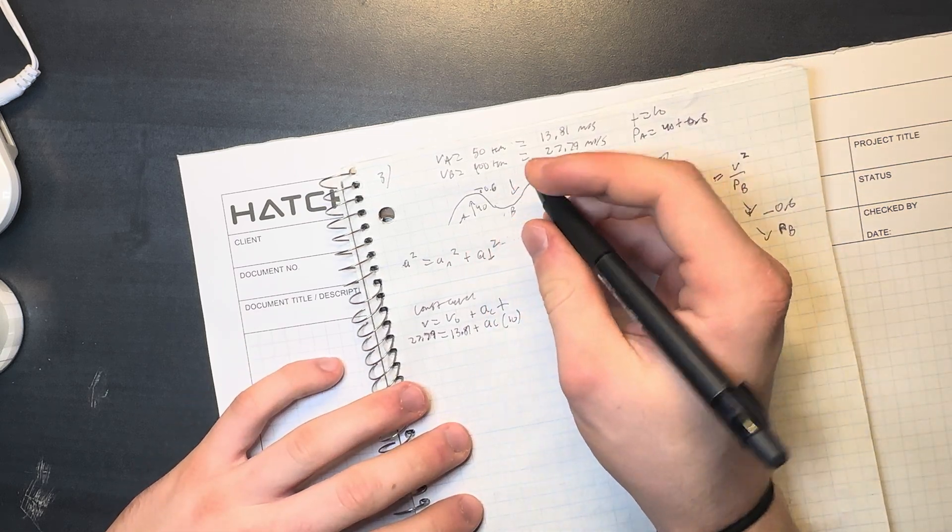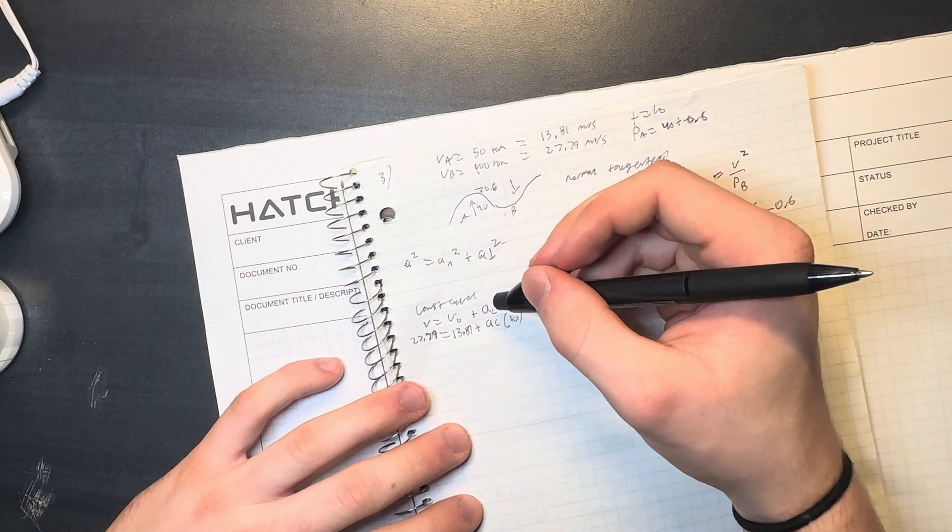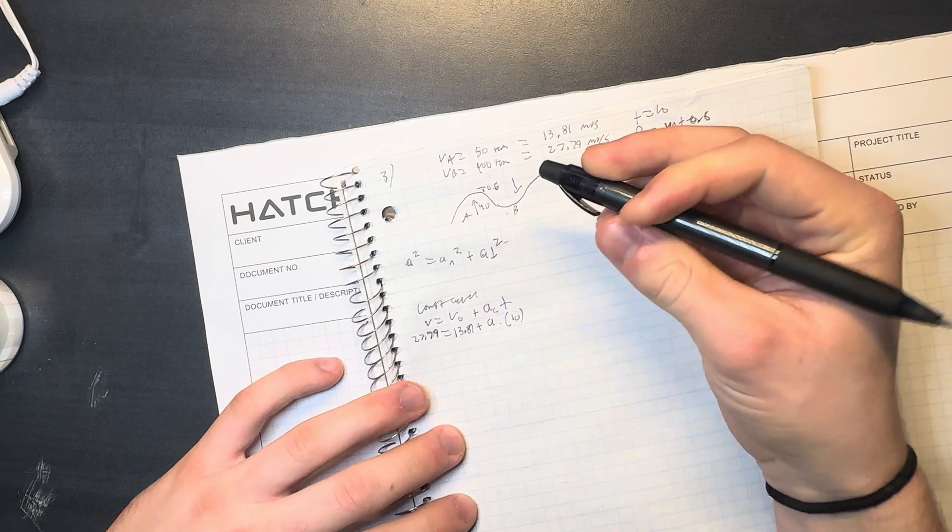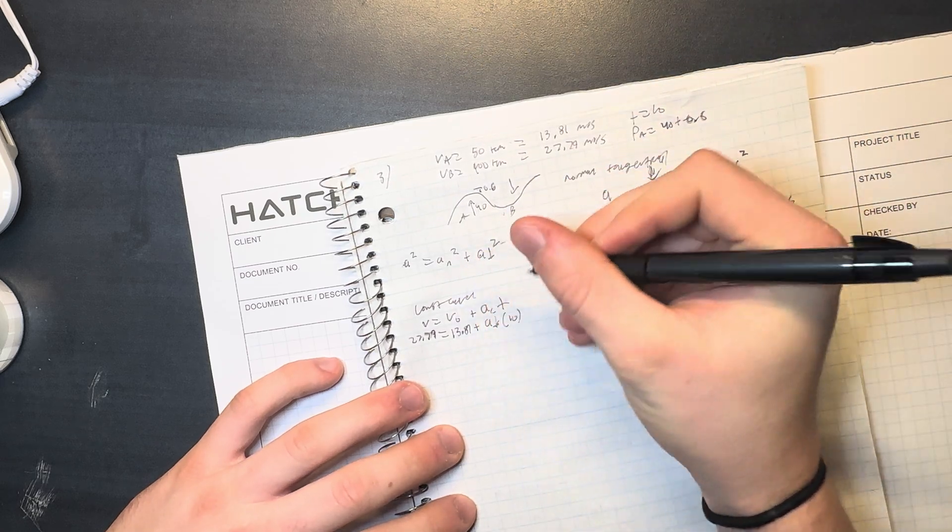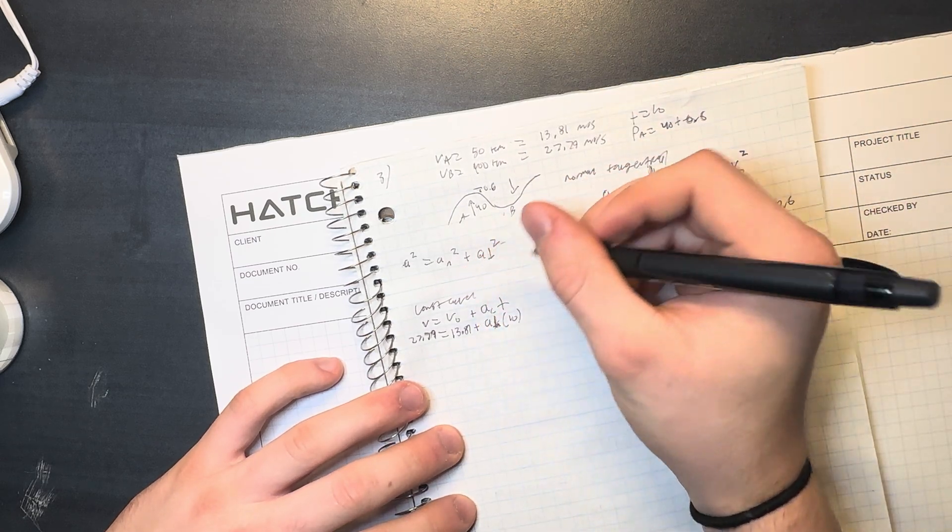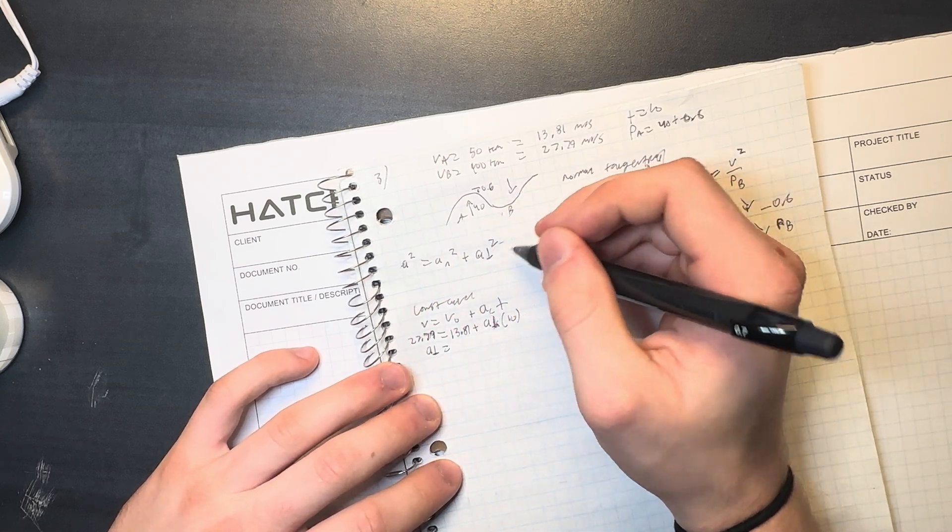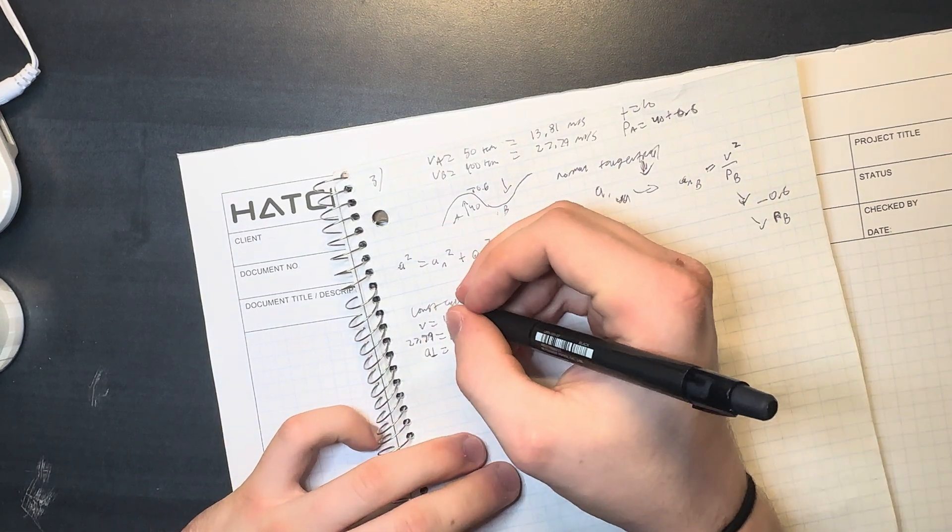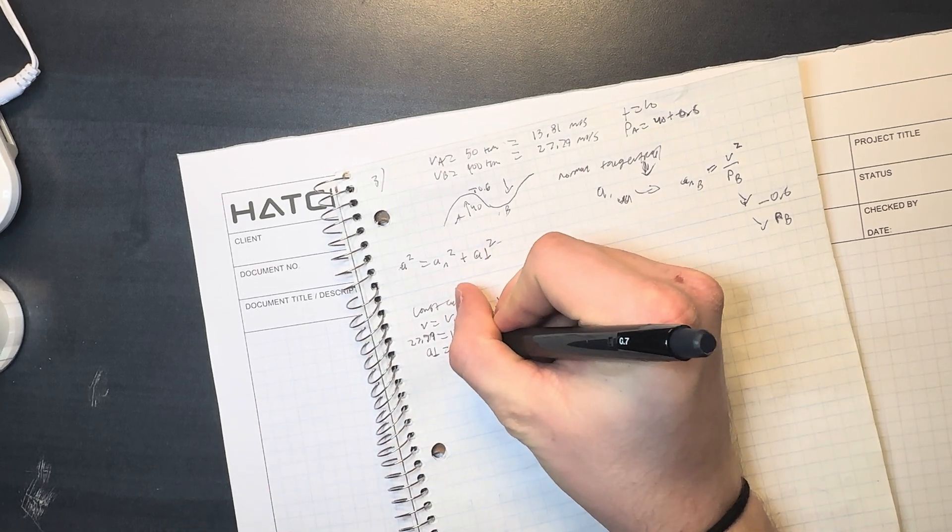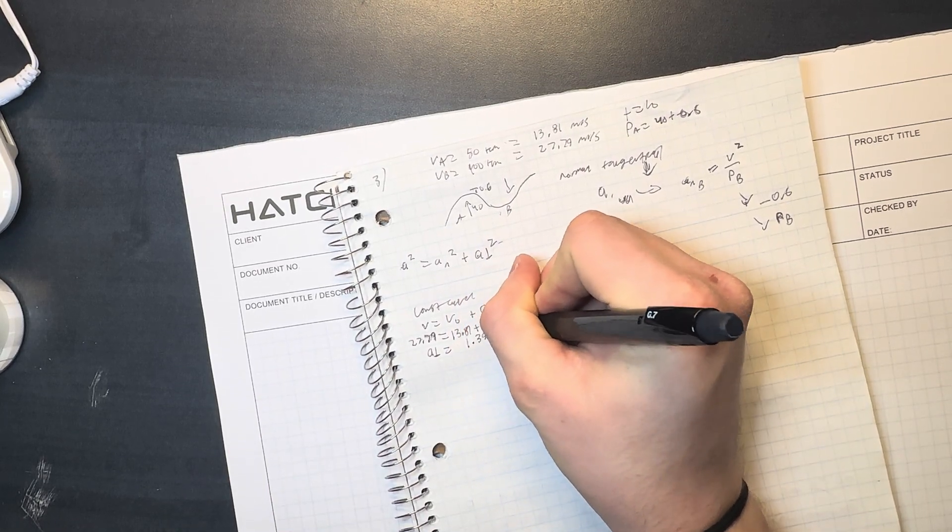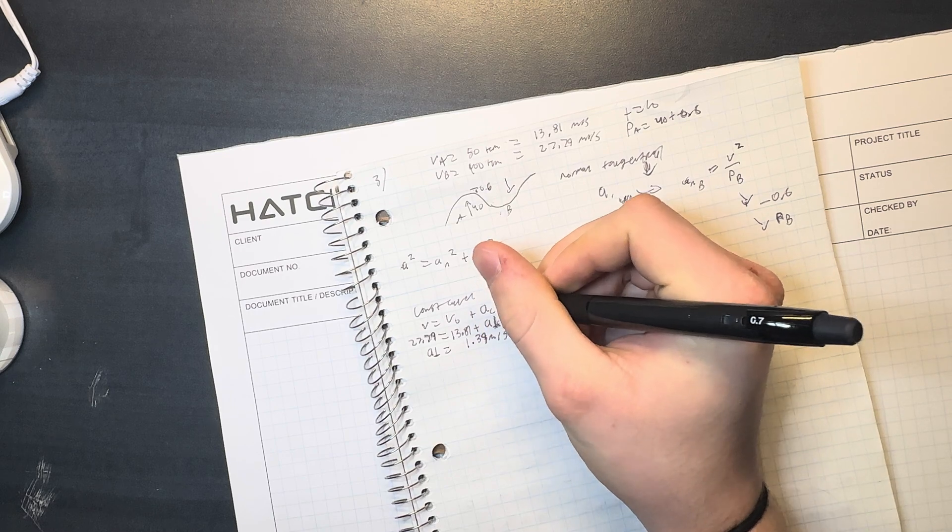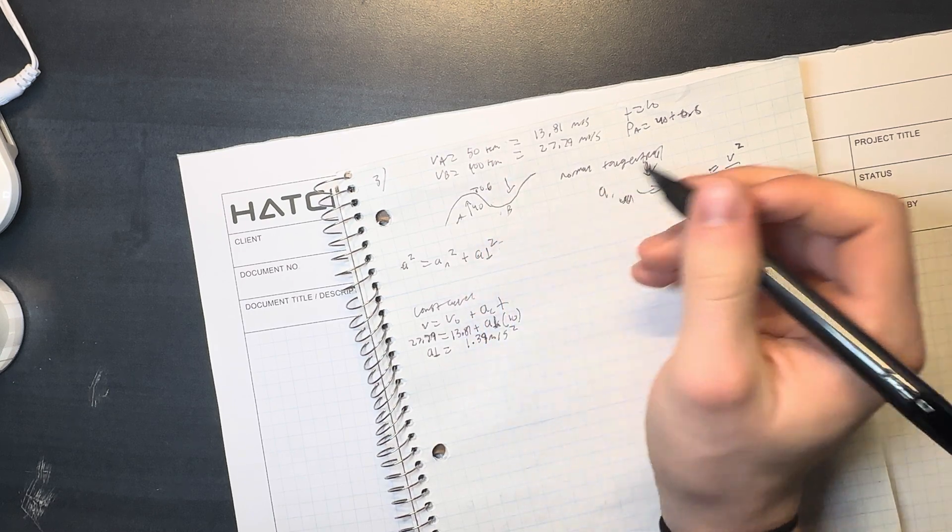I'm going to change this to a_t because constant acceleration. So we get 1.39 meters per second squared. I totally did that in my head. Okay.